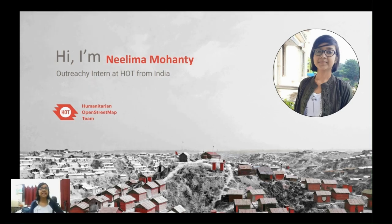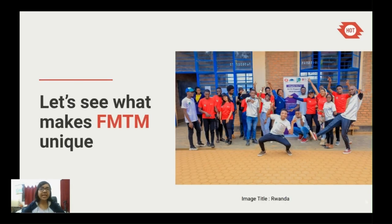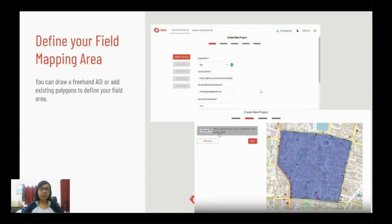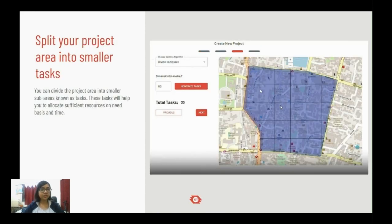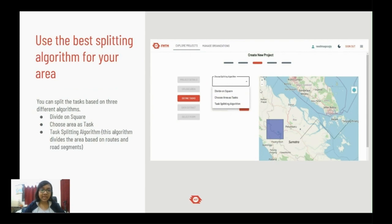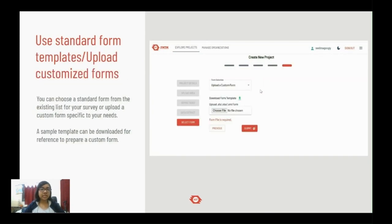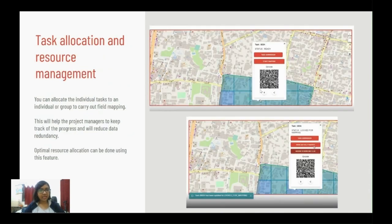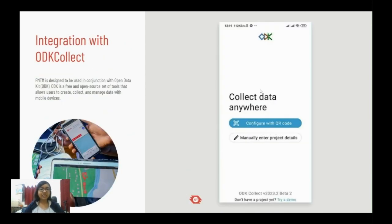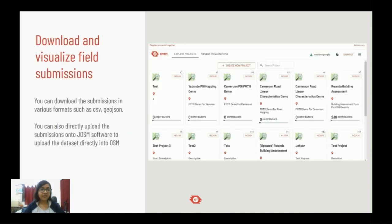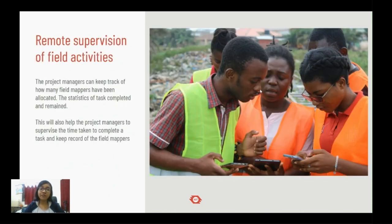Hi, I'm Neelima Mohanty, an Outreachy Intern at HOT from India. The unique features that make FMTM different from all other mapping applications start with defining your field mapping area, splitting the project area into smaller tasks using the best splitting algorithm, OSM data extraction, uploading standard or customized forms, task allocation and resource management, and integration with ODK Collect. ODK is a free and open source set of tools that allows users to create, collect, and manage data with mobile devices. There is also a feature to download and visualize field submissions, followed by remote supervision of field activities.